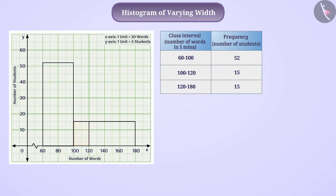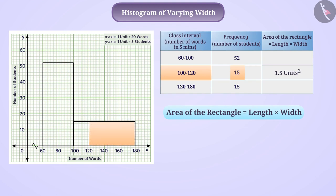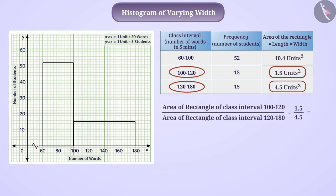The rectangle representing the frequency 15 of the class interval 100 to 120 is 1.5 units in length and 1 unit in width, so the area of this rectangle is length multiplied by width, equal to 1.5 square units. Similarly, the rectangle denoting the frequency 15 of the class interval 120 to 180 is 1.5 units in length and 3 units in width, so the area of this rectangle is equal to 4.5 square units. The ratio of the areas of these rectangles is 1 to 3, but the ratio of the frequencies of both these class intervals is 1 to 1.